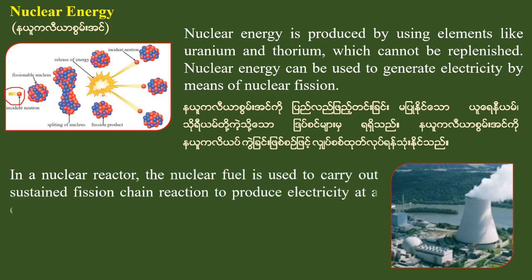In the nuclear reactor, the nuclear fuel is used to carry out sustained fission chain reactions to produce electricity at a controlled rate. Uranium is used as the nuclear fuel in this chain reaction to generate electricity.